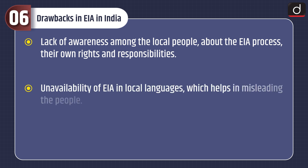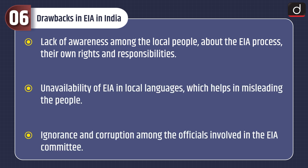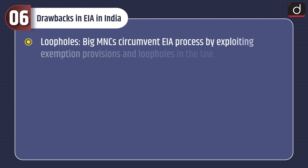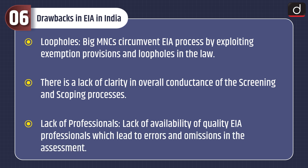Let's discuss the drawbacks of EIA in India. There is a lack of awareness among local people about the EIA process, their own rights and responsibilities. EIA is unavailable in local languages, which leads to misleading people. There is ignorance and corruption among officials involved in the EIA committee. Big MNCs circumvent the EIA process by exploiting exemption provisions and loopholes in the law. There is a lack of clarity in the overall conductance of the screening and scoping processes, and a lack of quality EIA professionals, leading to errors and omissions in the assessment.